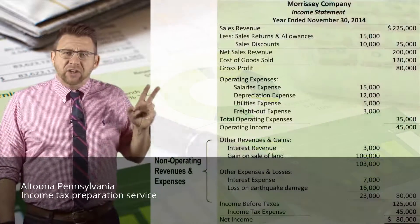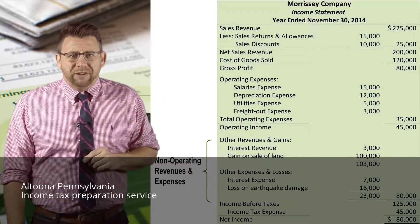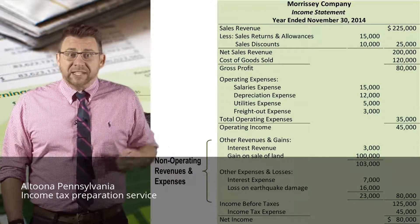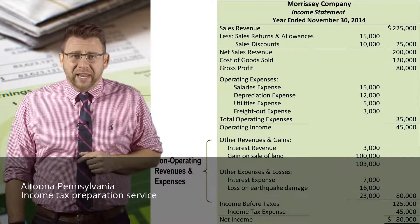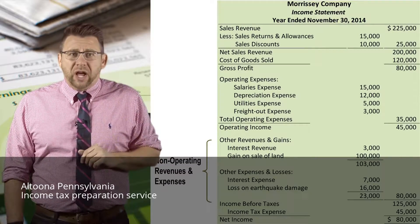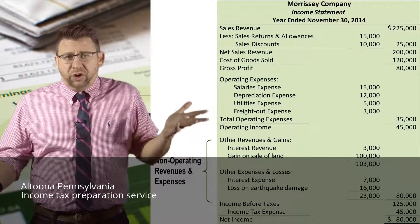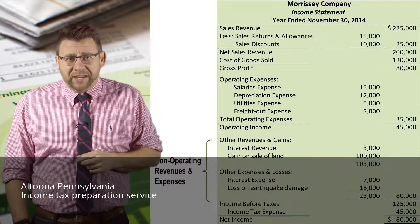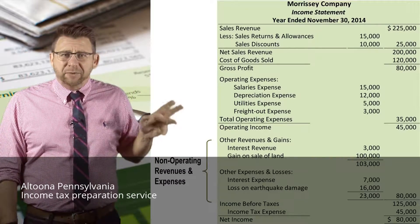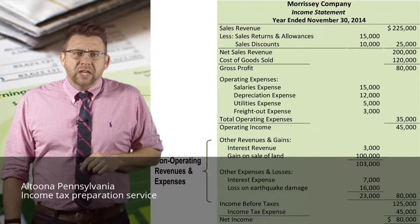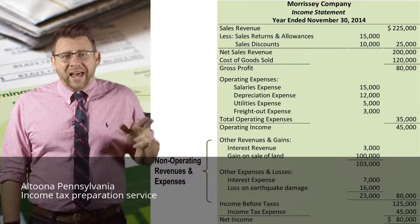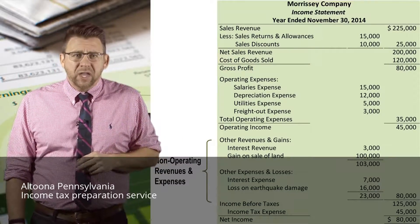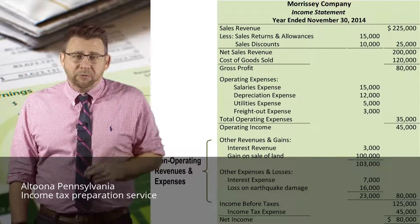The next section of the income statement reports non-operating revenues and expenses. These items are either one-time amounts, like a gain on sale of land or loss from earthquake damage, or items not part of central operations, like interest revenue — which is earned by making a loan — or interest expense, which is incurred by financing assets with debt. This section is sometimes known as the other section. Other revenues and gains are added to operating income, and other expenses and losses are deducted, giving us a new subtotal called income before taxes.